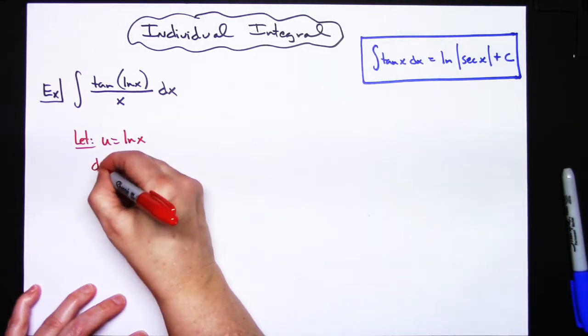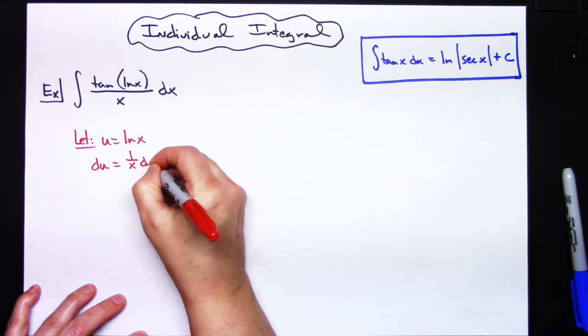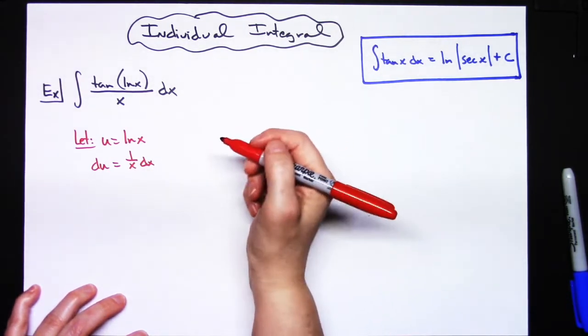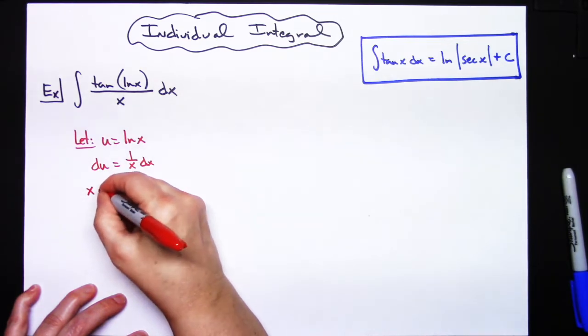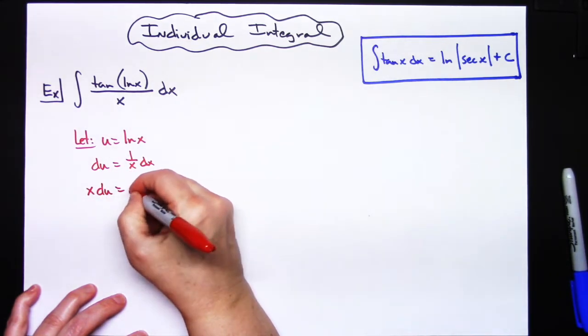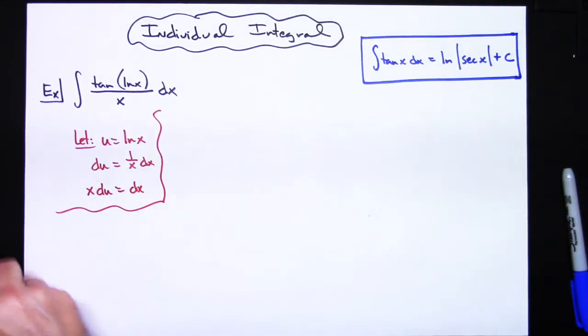Okay, then I'm going to take the derivative of both sides. du is equal to 1 over x dx. I want to solve all the way down for that dx, so I'm going to multiply both sides by x, so I'm going to have x du is equal to dx.